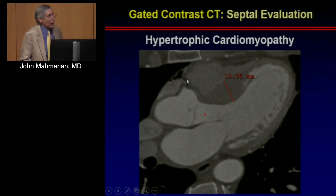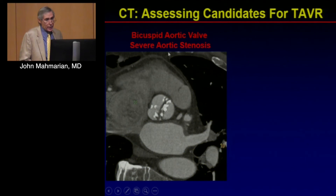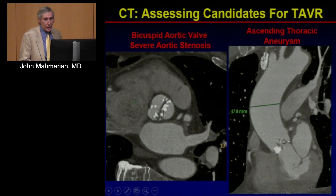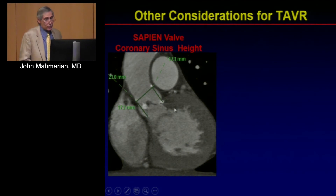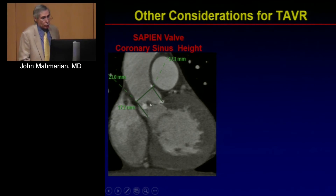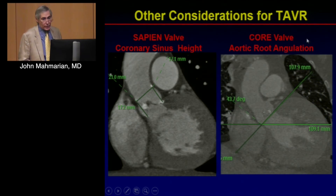We can also evaluate hypertrophic cardiomyopathy, which is a contraindication for TAVR valve placement, as well as bicuspid valves and aortic aneurysms. We routinely look at the coronary ostia height — very important for the Sapien valve — and the angulation using the perimeter with the CoreValve.